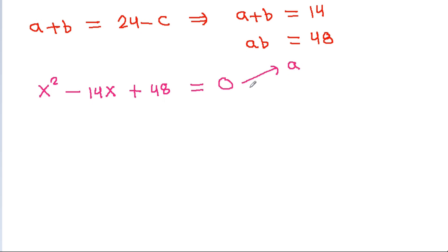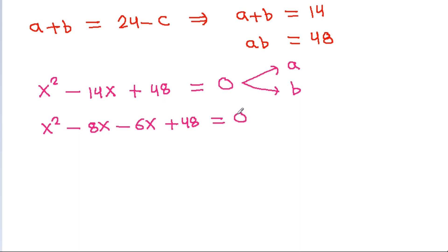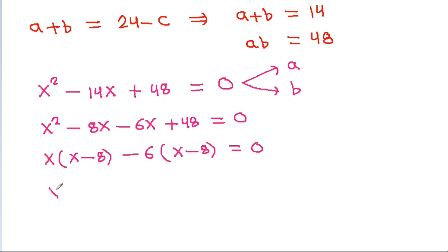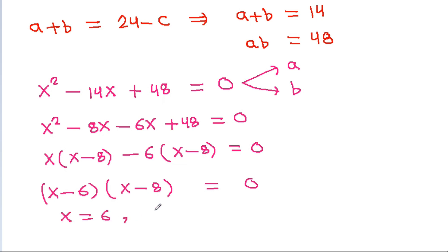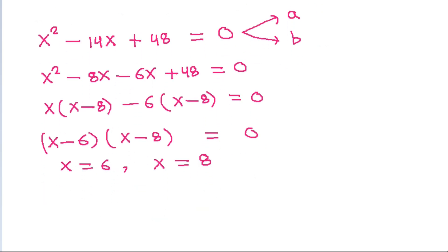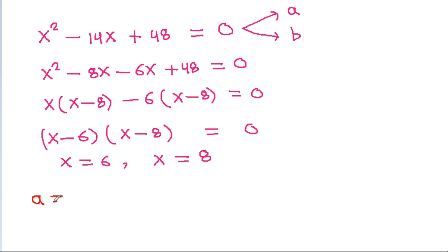The roots of this equation will be A and B. Factoring: x squared minus 14x plus 48 equals x squared minus 8x minus 6x plus 48, giving us x times x minus 8 minus 6 times x minus 8 equals zero. So we get x equal to 6 and x equal to 8. Therefore, either A equals 6 and B equals 8, or A equals 8 and B equals 6.